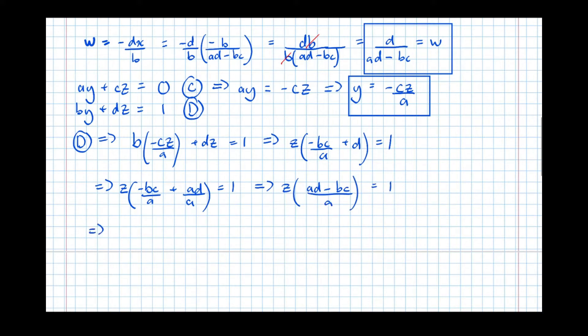Put them all over the same denominator. So that becomes AD minus BC over A equals 1. Then just rearranging that to get Z equals, that means that Z equals A over AD minus BC. So we're almost there. So now putting a box around that, that's a key part of our working. We want to draw any markers' attention to it in an exam.